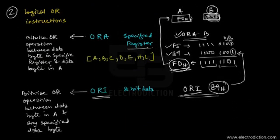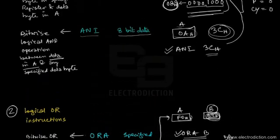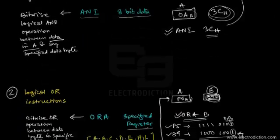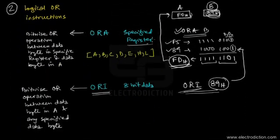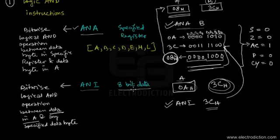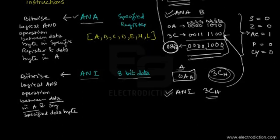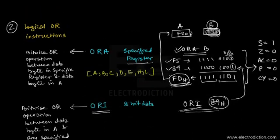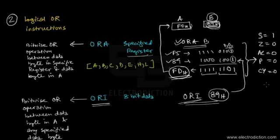A useful pattern: whichever logic instruction has an A at the end, its operand is a specified register — this applies to both AND and OR. Whichever logic instruction has an I at the end, its operand is a specified 8-bit immediate data. The flag bits are modified as shown for these OR operations.